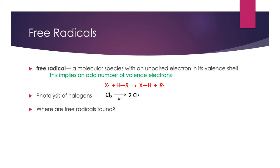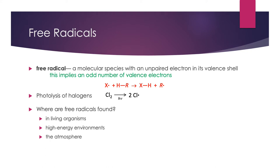Where might we find free radicals? Is this something you only find in exotic places, or is it something you can find just about anywhere? Virtually every living organism has free radicals in it, and in fact you may have heard about the effect of radicals on your health and on aging. They're also present in high-energy environments — anytime you have a lot of energy, there's the possibility of breaking bonds, and oftentimes when bonds break they form two free radicals. They are found in the atmosphere, which we'll discuss toward the end of this lesson. They're also present in industrial laboratories, and free radicals are used for some very important industrial processes.